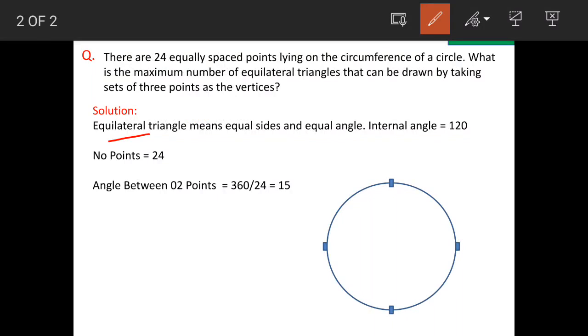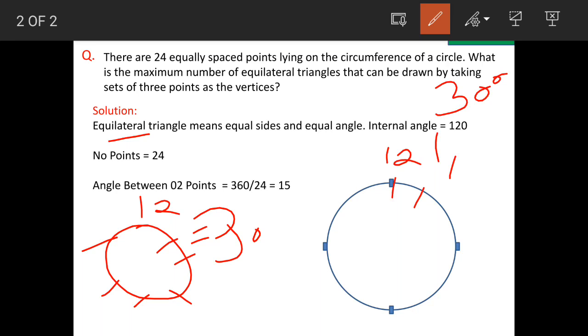So equilateral triangle we have seen. Now we will see how to solve this question in a geometric manner. We will consider a watch. In a watch, we have 12 parts, and each part is equal to 30 degrees. That means if this is 12 and this is 1, the angle here is 30 degrees between these two points.